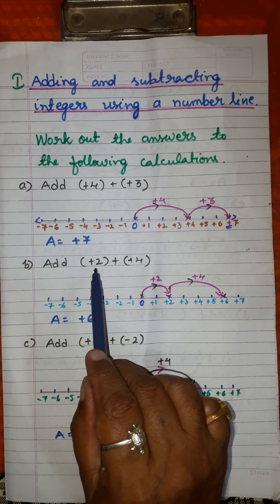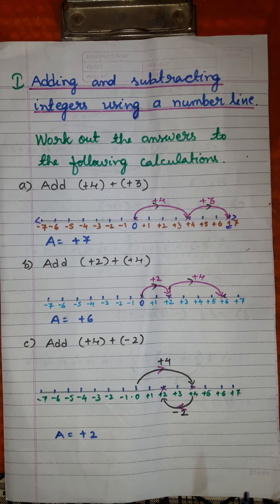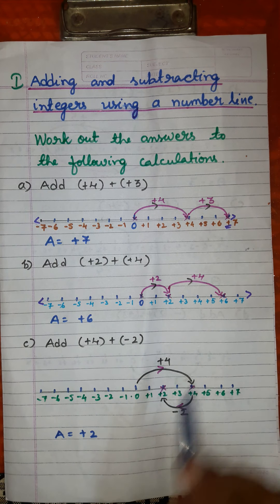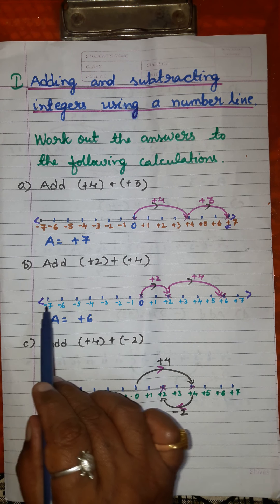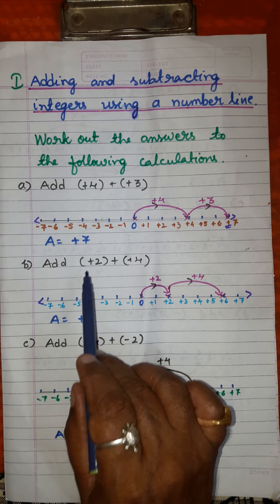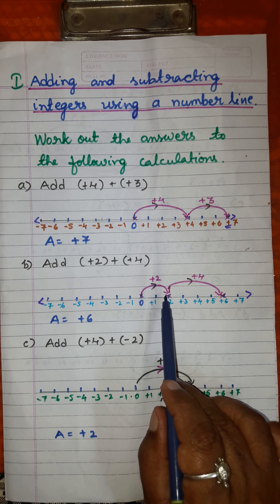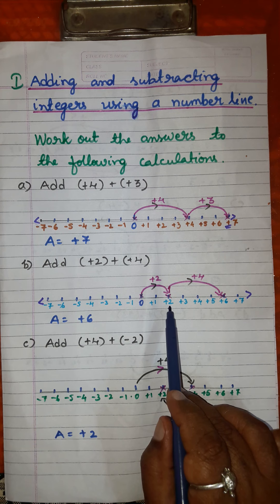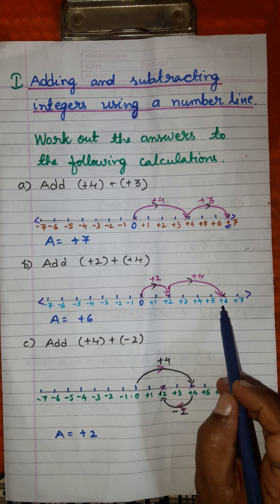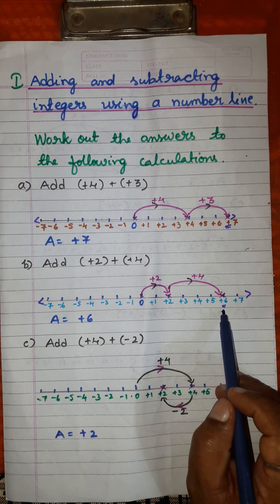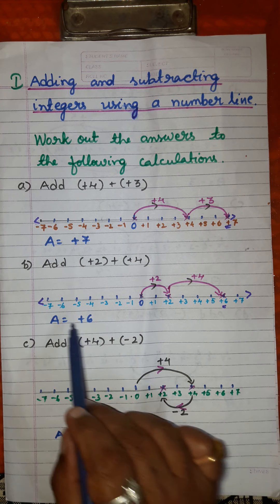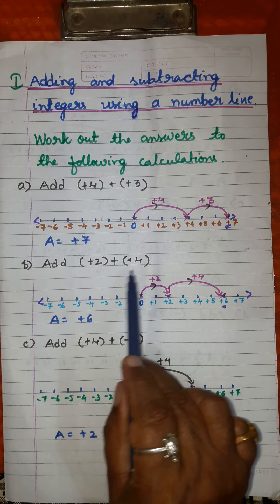The second problem: add plus 2 and plus 4. Again draw a number line, mark positive integers to the right of 0 and negative integers to the left of 0. You have plus 2, move to the right 2 divisions — we reach point 2. Again from there move 4 divisions to the right: 1, 2, 3, 4. Finally we are at the point plus 6. So the answer is plus 6. Mentally: plus 2 and plus 4 is plus 6.